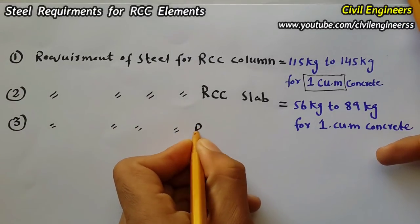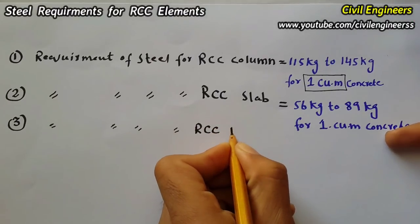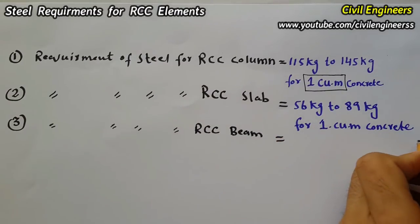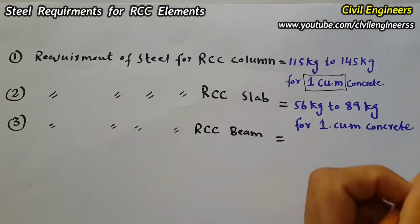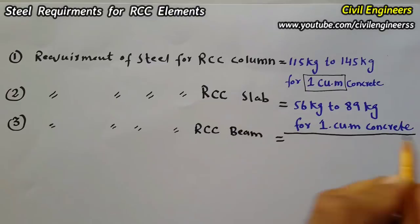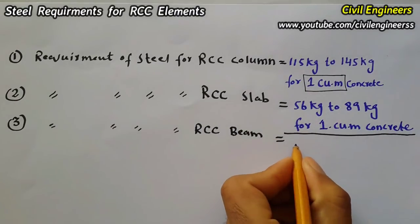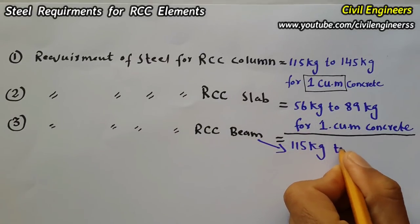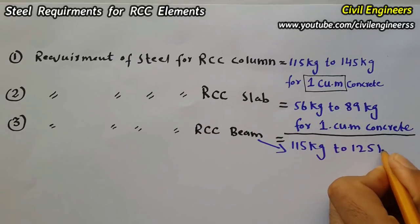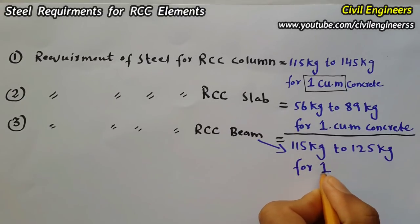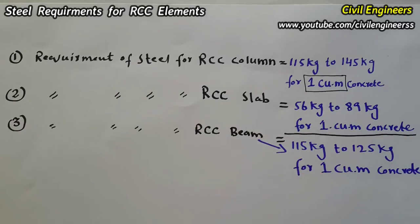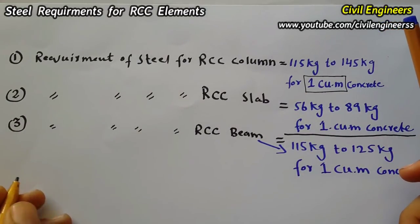The third requirement is steel for an RCC beam. For one cubic meter of concrete, we require 115 kg to 125 kg of steel for an RCC beam.